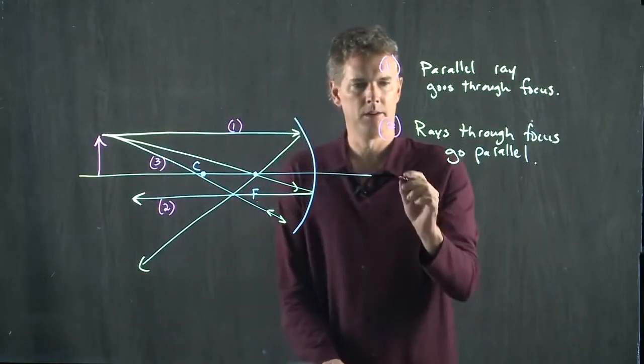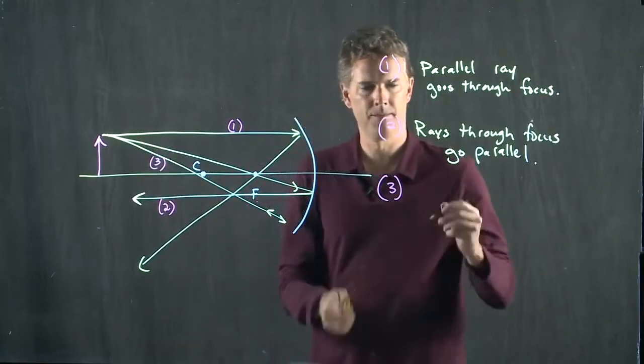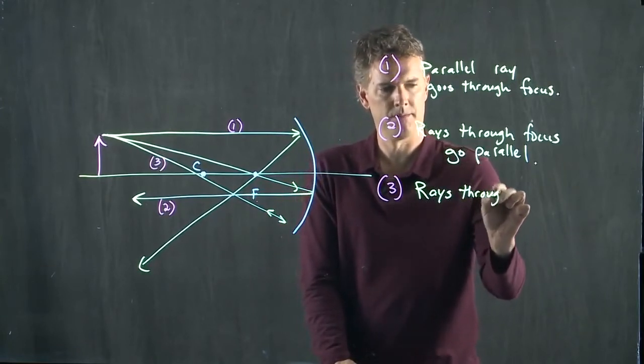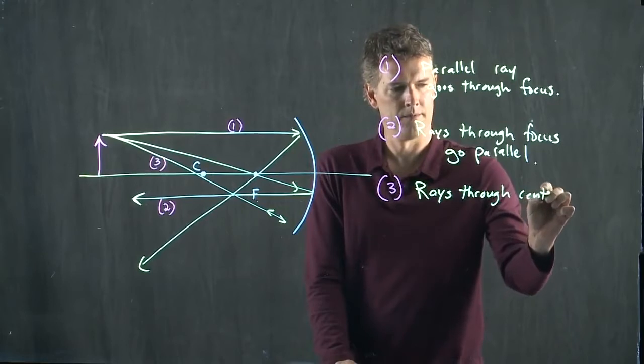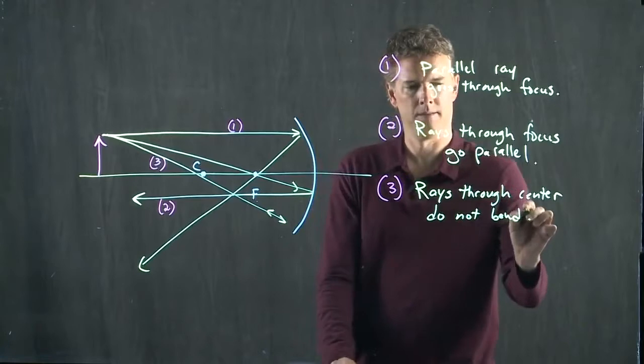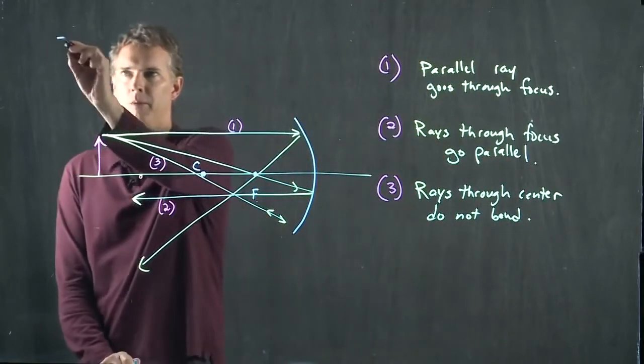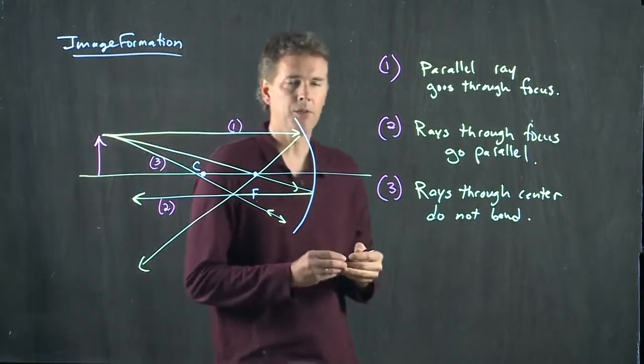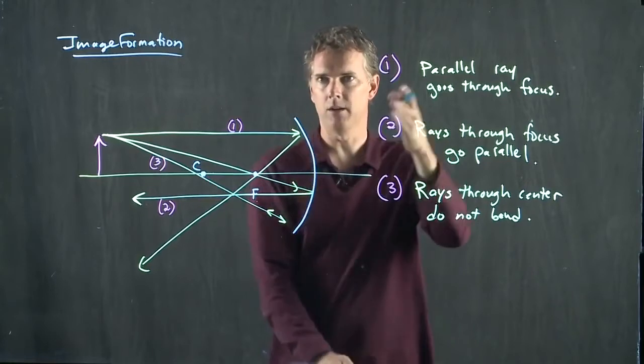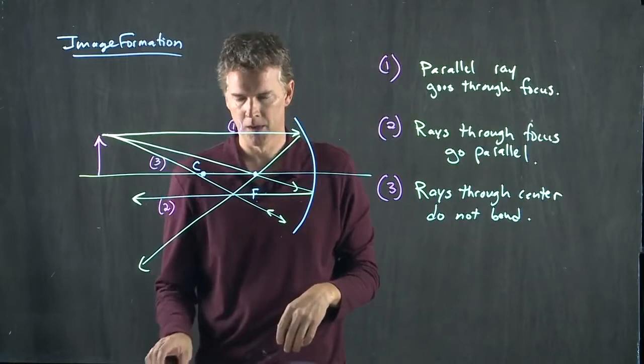And the final rule is this ray number three. Rays through the center do not bend. This is image formation. And these three rules are important to understand because they not only apply to mirrors, they are going to apply to lenses once we start talking about lenses.